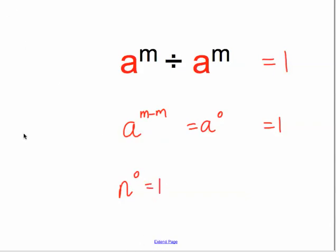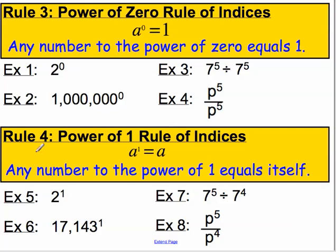So let's use this in a few examples. This is Rule 3, the power of 0 rule: any number to the power of 0 equals 1. So 2 to the power of 0 must equal 1. A million to the power of 0 — it doesn't matter how big the base number is — because it's to the power of 0, that's equal to 1.